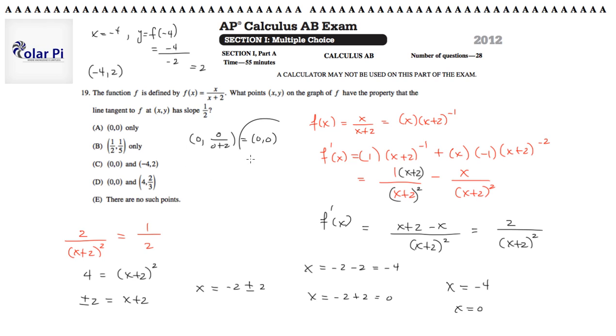So, the two points are 0 comma 0, and negative 4 comma 2. 0 comma 0 and negative 4 comma 2 is answer C. Alright, hope that made sense. Take care.